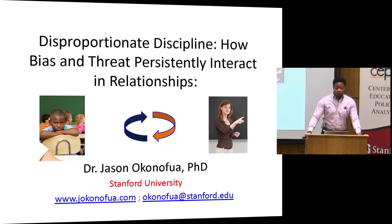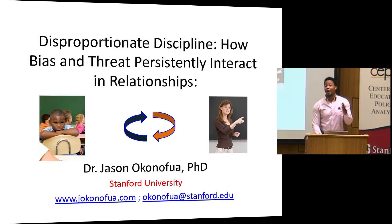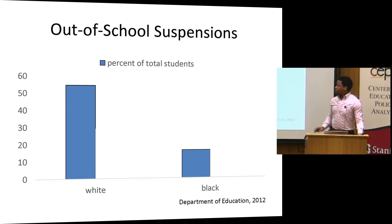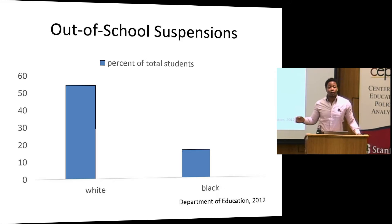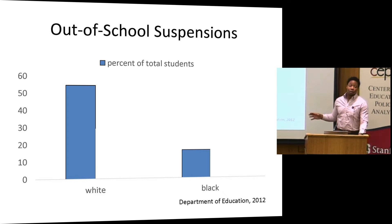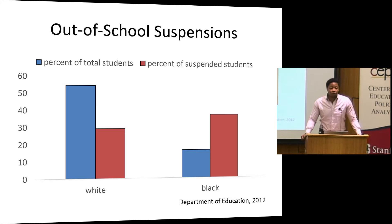The form of inequality I'm going to talk about is disciplinary action, or more specifically suspensions, which are particularly impactful because it removes children from the learning environment. This is data from the Department of Education on virtually all schools in the United States, and it's found that black students are about 14 percent of the total student population across the country. However, they are about 44 percent of the students who are receiving suspensions across the country.